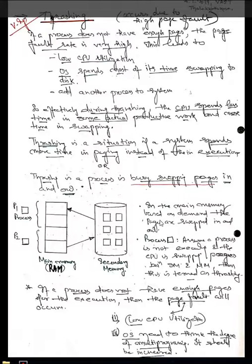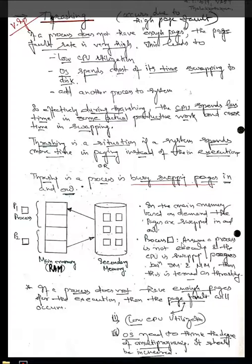In main memory, based on demand, pages are swapped in and out. As per the need of the CPU, pages are brought from secondary memory into main memory. If a process is not executing and the CPU is swapping pages between secondary memory and main memory, then that is termed as thrashing.